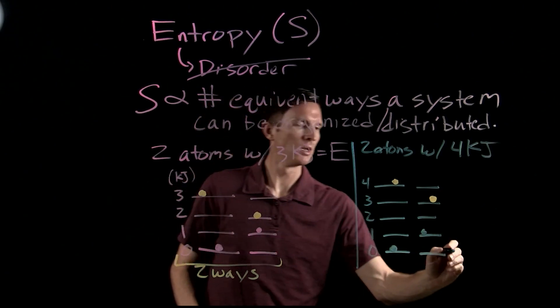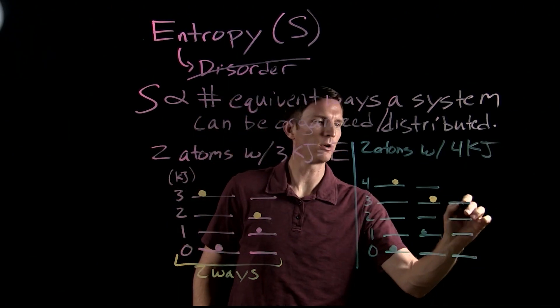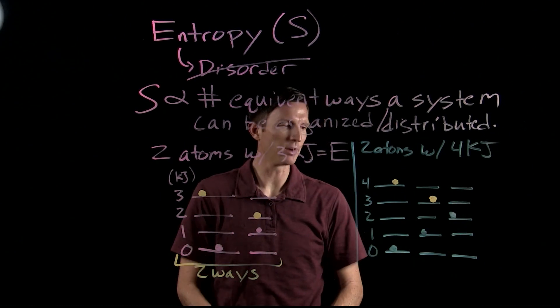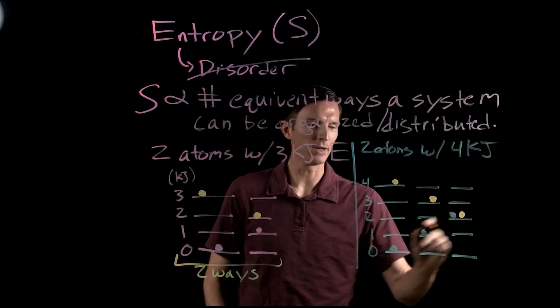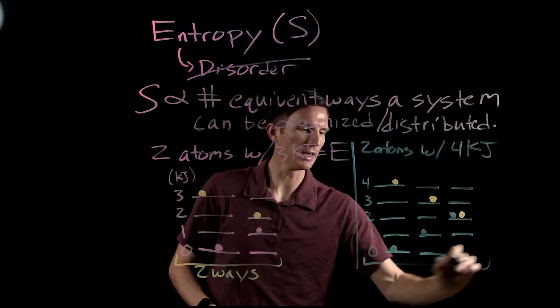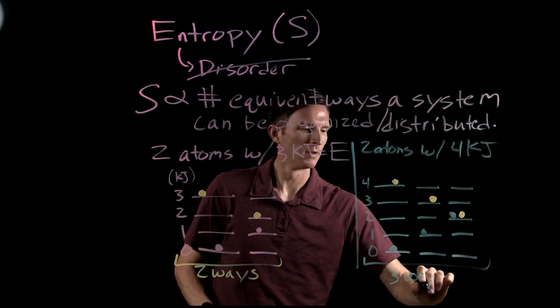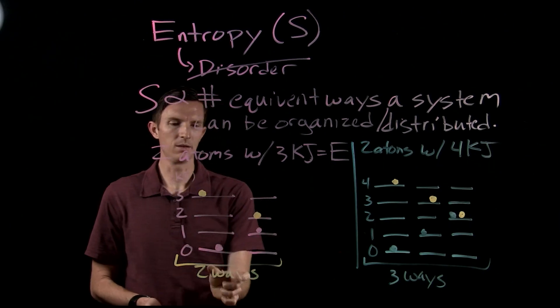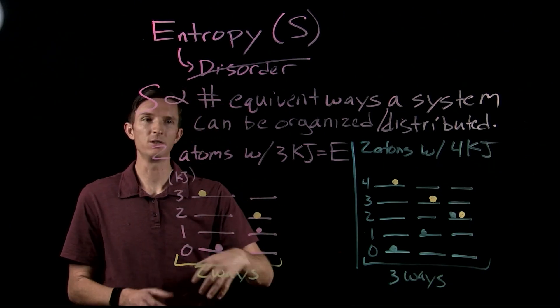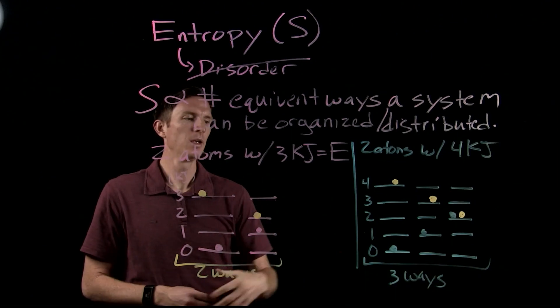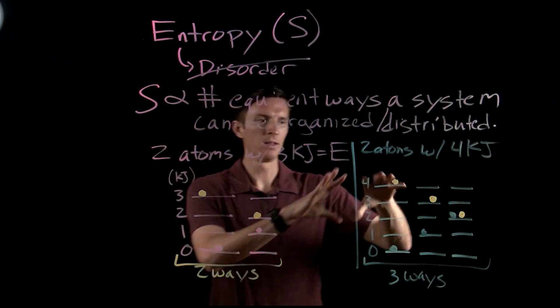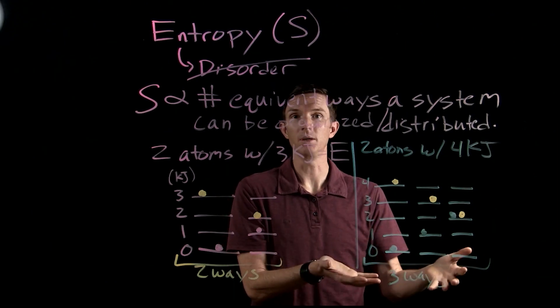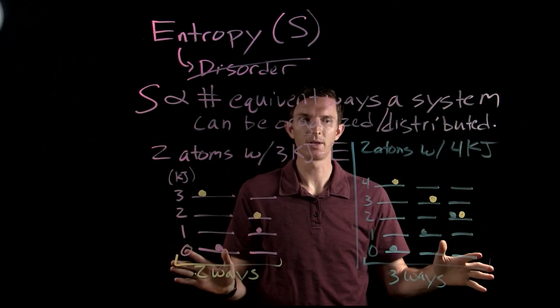As two possible energies. But now we also have one more possible energy distribution: one of them at two and the other at two. So now we see that we have three ways that we can distribute our energy here. In the first case, there were only two ways to distribute energy equivalently. We haven't changed the amount of energy available. Here we have three. So we would say this system at the higher energy has greater entropy. More ways we can distribute it.